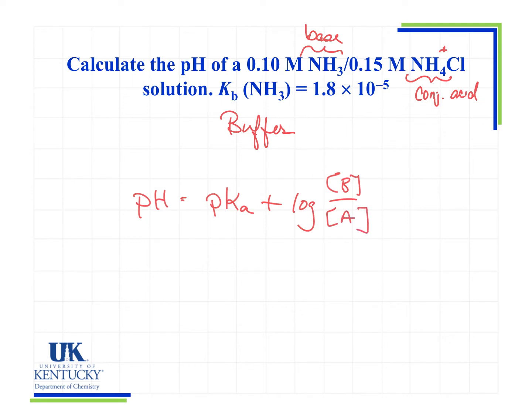Now students sometimes want to do something different if we've got a base buffer rather than an acid buffer, but we still use exactly this equation. To get the pH, we need the pKa. I see here that they gave me the Kb, so I'll need the Ka so I can get the pKa.